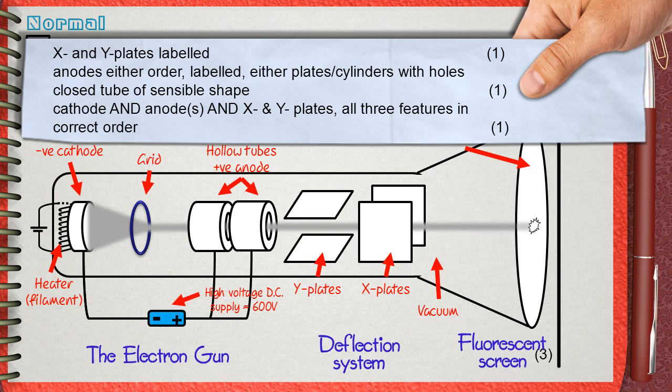The third mark is for the arrangement of the parts, cathode and anodes, and X and Y plates. All three features in correct order. This is the third mark.